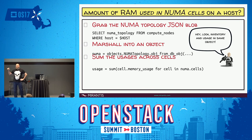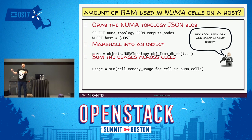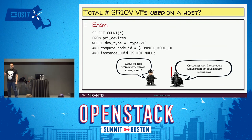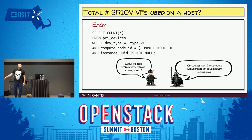The amount of RAM used for NUMA cells uses the exact same numa_topology field from compute_nodes. We actually serialize both the inventory and the allocation/usage data all into one object and write it back to the database. And of course you can't get PCI information about Ironic nodes. As the stormtrooper might say: I find your assumption of consistency disturbing.